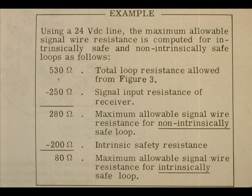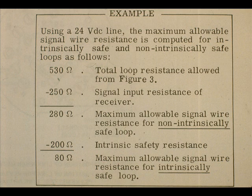For an intrinsically safe loop, an additional 200 ohms is added to the receiver. 530 ohms minus 450 ohms leaves 80 ohms maximum for the signal wire resistance.